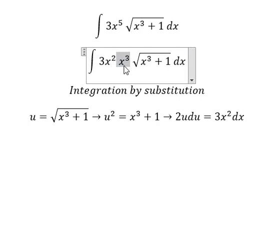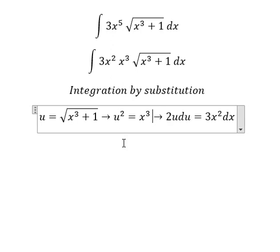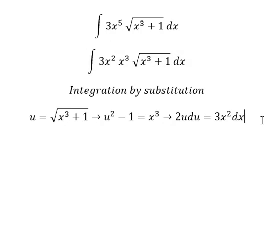Because we have this equation, I will move the 1 to the left side, so u² - 1 = x³. Now we can make the substitution.